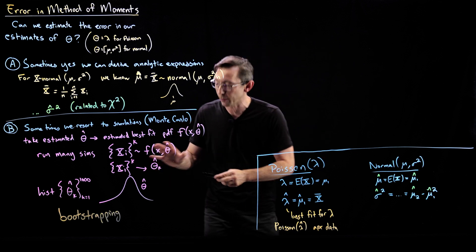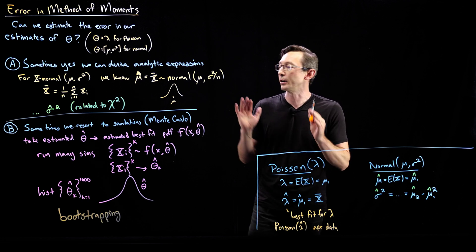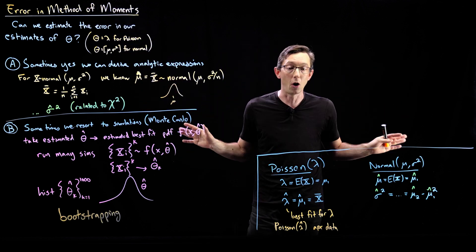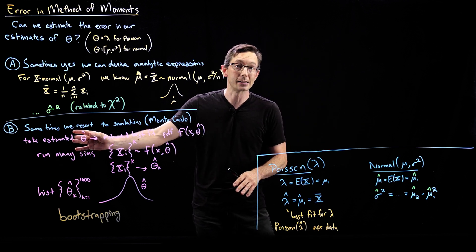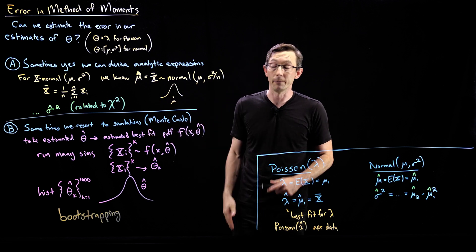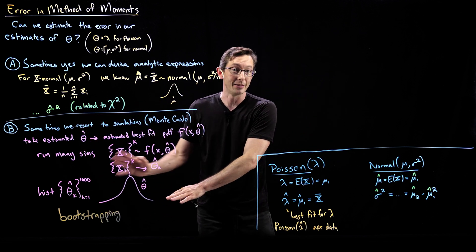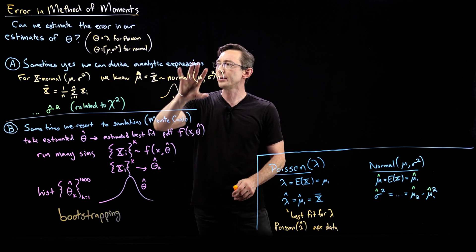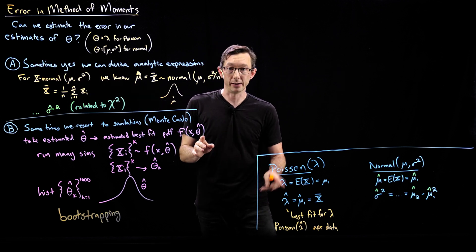Bootstrapping is a super powerful method in statistics, used all the time in machine learning, for the method of moments, for maximum likelihood estimators, and for all kinds of cases where we want to estimate the variance in some estimated parameter and there's no nice analytic expression. We'll have a code example of this in the next lecture.